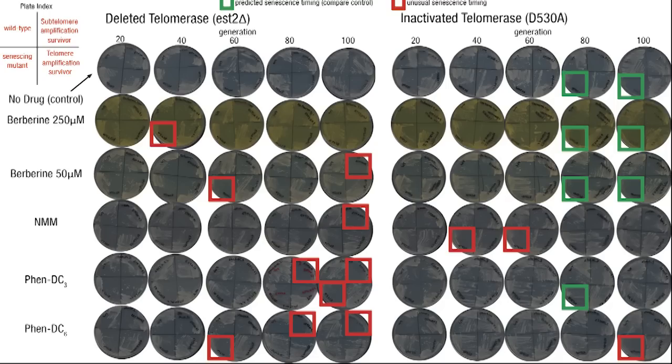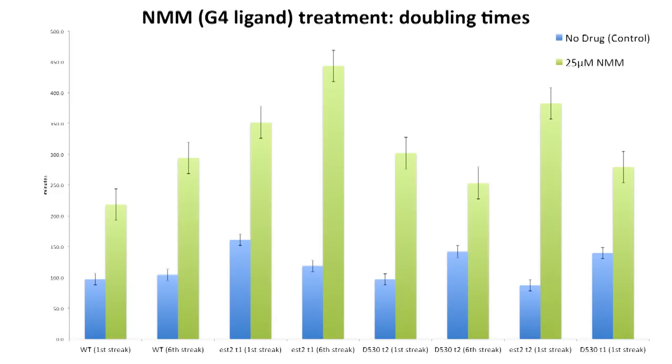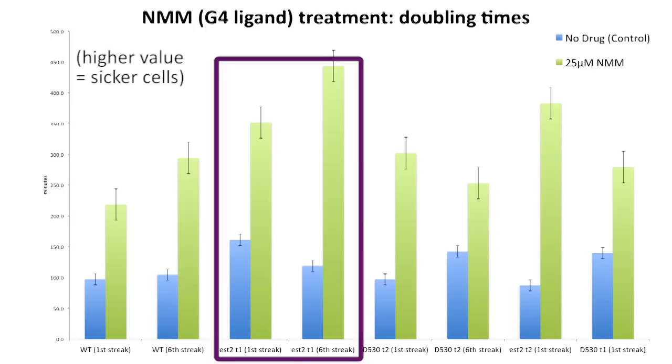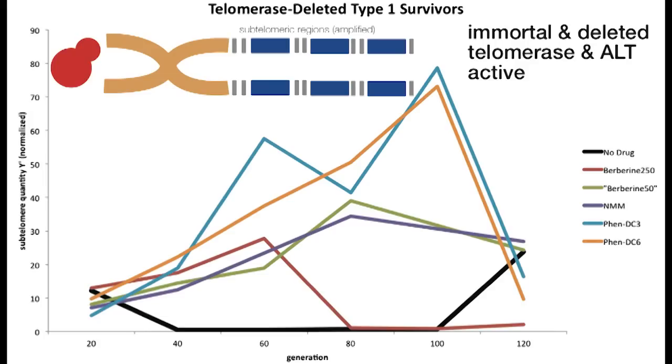I discovered that the ALT-E cells with missing telomerase did die earlier than the wild-type and senescing controls. Also, growth curves show that this strain of cells grew the slowest in the presence of ligands. Even though they did die earlier, these cells still experienced 10-to-100-fold recombination.